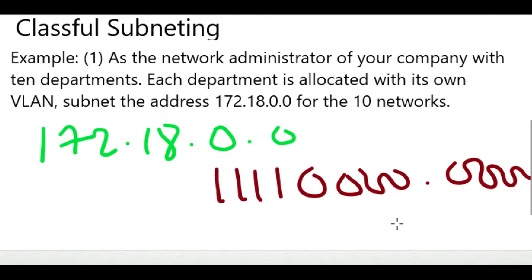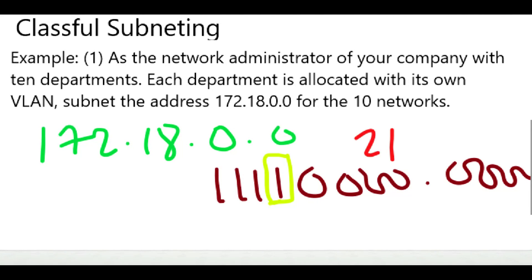This last bit before the host portion is called our higher order bit, and this bit is also called the block size. It determines the size of the network and also determines the next network. If you plug in the positional values here, you can see we have 1, 2, 4, 8, and 16. So this tells us that our block size is going to be 16.